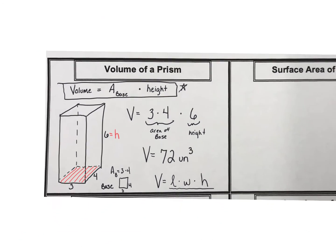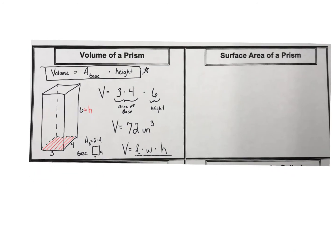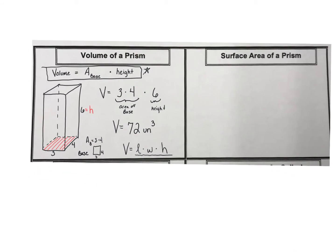Then we're going to talk about the surface area of the prism that we have drawn here. I'm going to give you two different ways of solving for the surface area of a prism — there are two options. You decide which one you like better. Maybe you only put down the notes for the one you're most likely to use. Sometimes different shapes lend themselves to different ways of going about it, so maybe you want both options.